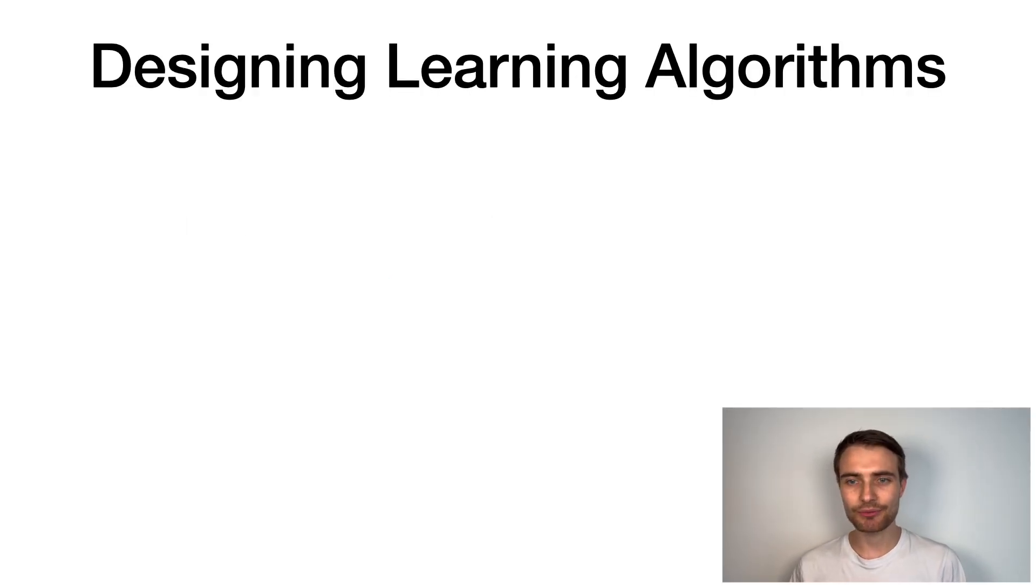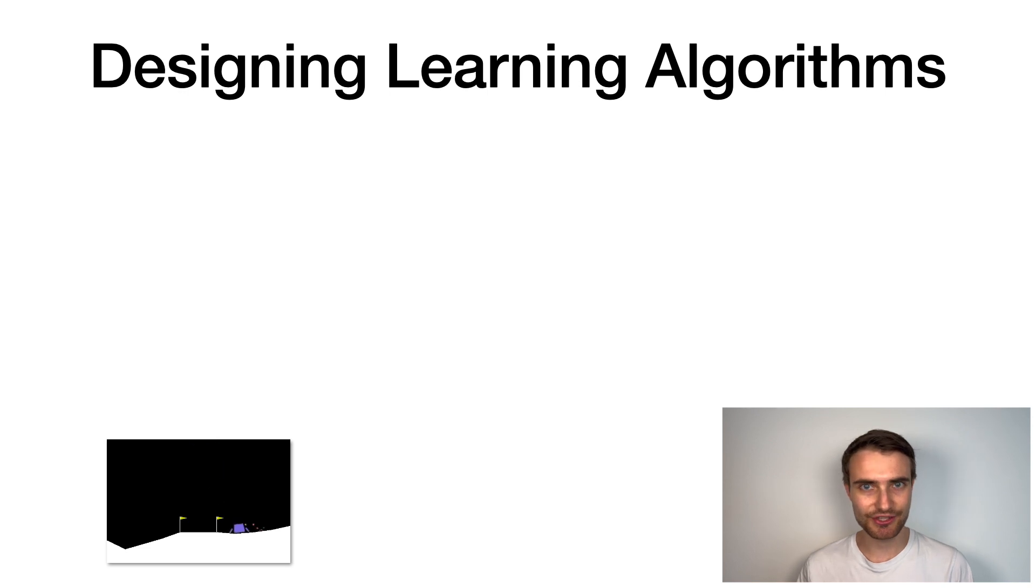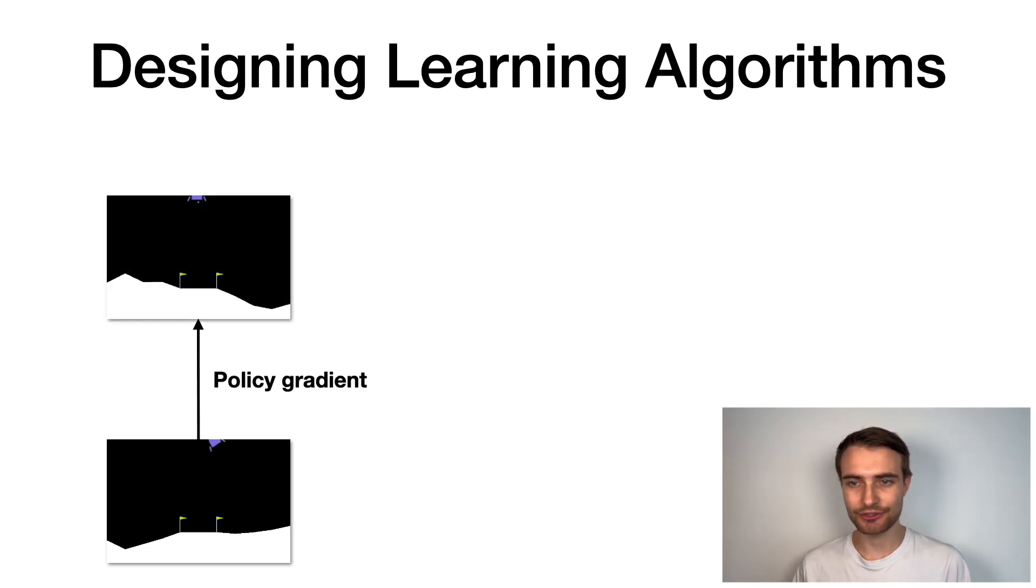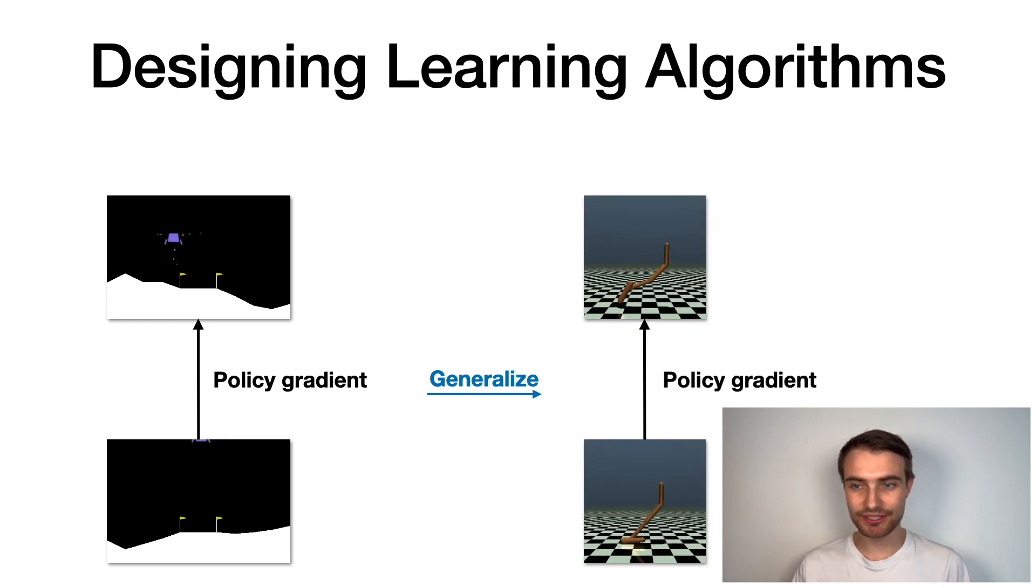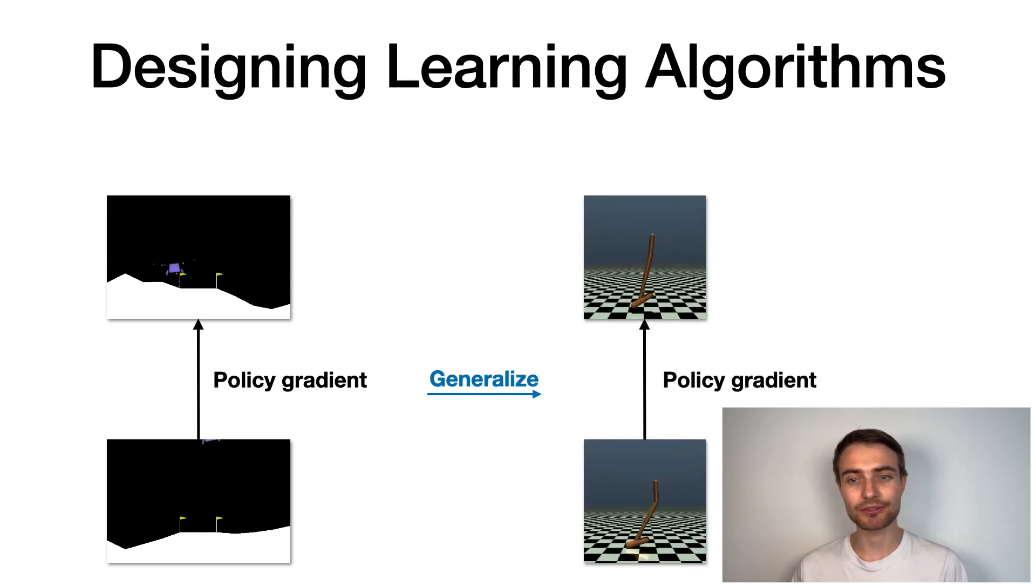But before we go into meta-learning, what does designing learning algorithms manually look like? Let's say we are given a problem such as this Lunar Lander RL environment. Conventionally, we as researchers will invent a learning algorithm, say a policy gradient, to maximize the expected reward. We expect this algorithm to not only work in the specific environment, but to be applicable to a wide range of them.